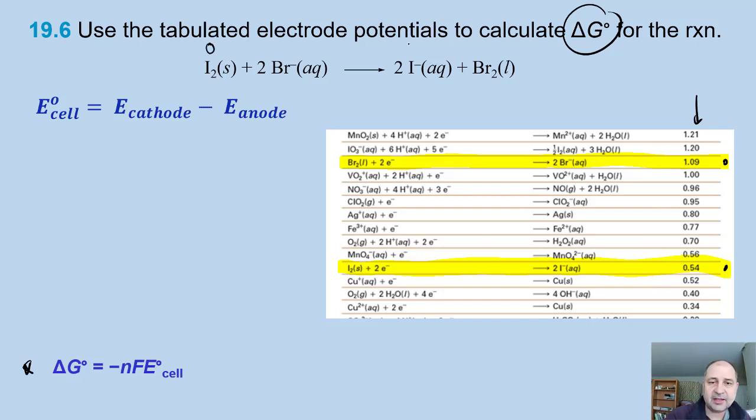The reduction is iodine turning into iodide, so we have I₂ being reduced. There are two electrons, one per iodine turning into iodide, or two of them. If I find that down here, the electron potential is 0.54 volts. This is the reduction, or the cathode. The second reaction is the oxidation, so we have bromide.